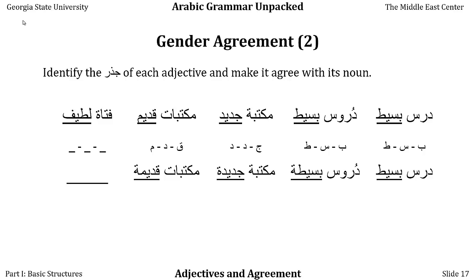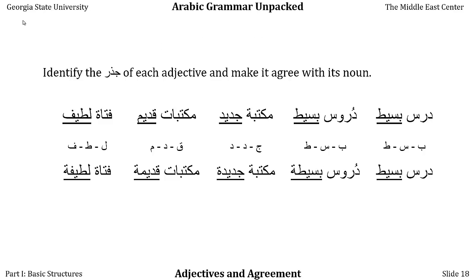In the final example, we have fatat — a fatat is a young woman, an unmarried woman in Arabic culture — and latif, which has many meanings: nice, kind, generous, agreeable. Its root is lam-ta'-fa. Because fatat is a feminine singular noun referring to a feminine singular person, we add ta' marbuta to the adjective: fatat latifa, a nice young woman.